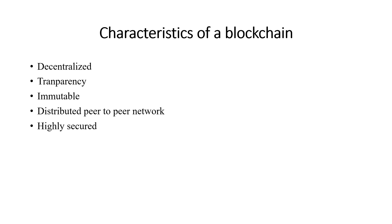Now let's look at the characteristics of blockchain. First, it is decentralized — there is no centralized authority. It is distributed, peer-to-peer, and all blocks are transparent and present among all nodes in the network. It is more transparent because duplicated copies of the blocks are present among all nodes, so if any hacker tries to modify a block in one system, the original data will still be present in the remaining systems.